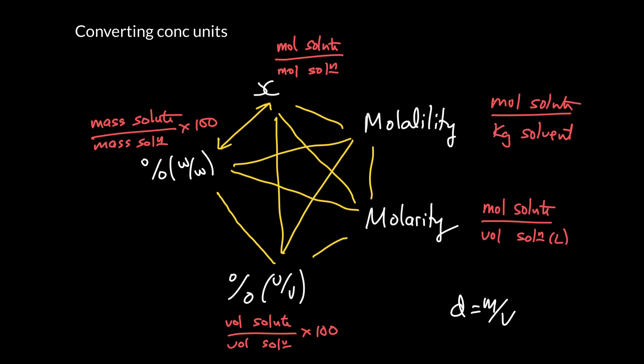Sometimes you're given the density of the solute, sometimes the solvent, sometimes the solution. So always make sure you're using the correct one, because you can get mass by multiplying density by volume, or you can get volume by dividing mass by density. So you can always go between one and the other, just be careful you're using the right density value.